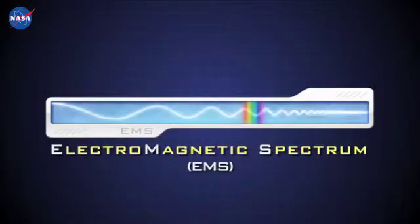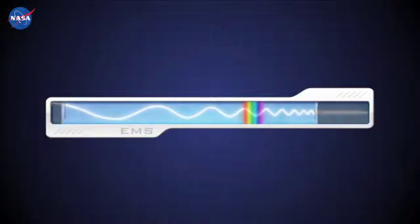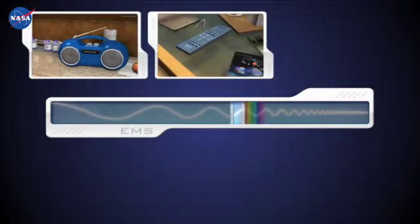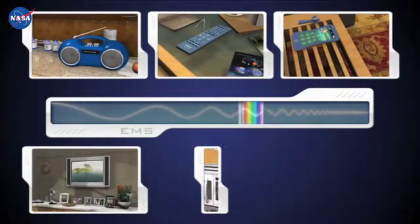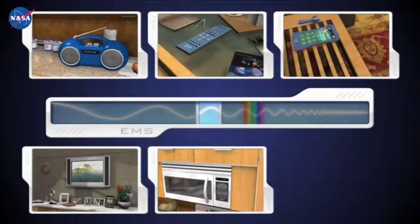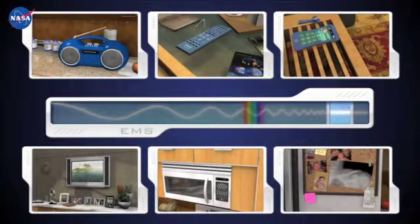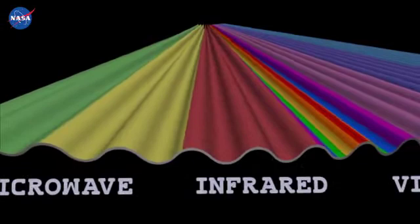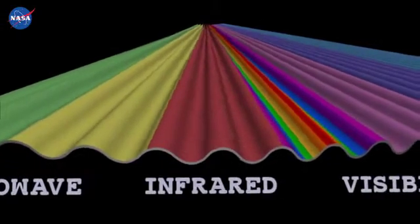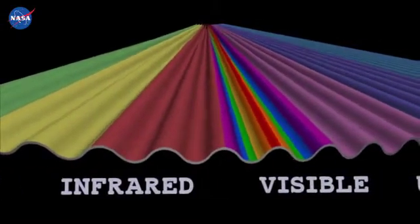The electromagnetic spectrum, or EMS, on which these spectral bands live, is divided into seven regions containing various wavelengths, frequencies, and energies that allow us to see, hear, and feel the matter around us. The regions of focus for the MODIS reflectance products are the visible and the infrared.